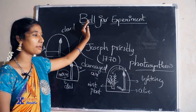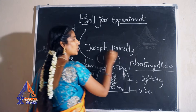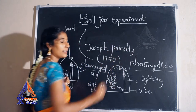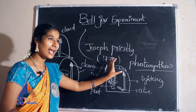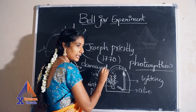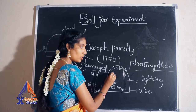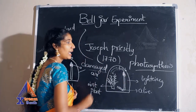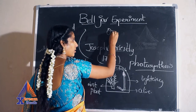So this experiment is called the Bell Jar experiment, done by Joseph Priestley. There is a gas which is produced in the bell jar by the plant, and with the help of that gas only, the candle is getting lighted. What is that gas? Oxygen.